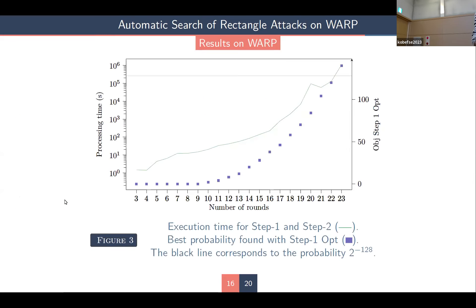For the distinguisher results on WARP: up to 22 rounds we can compute the distinguisher probability in less than two days, but the computation time grows exponentially as we add rounds.